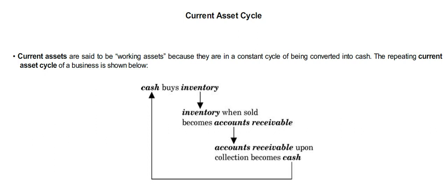Accounts receivable will change to cash when the customer pays for it. Once the customer pays, the money goes to the enterprise. The organization uses that money to buy inventory once again, so this is the cycle which keeps on going.